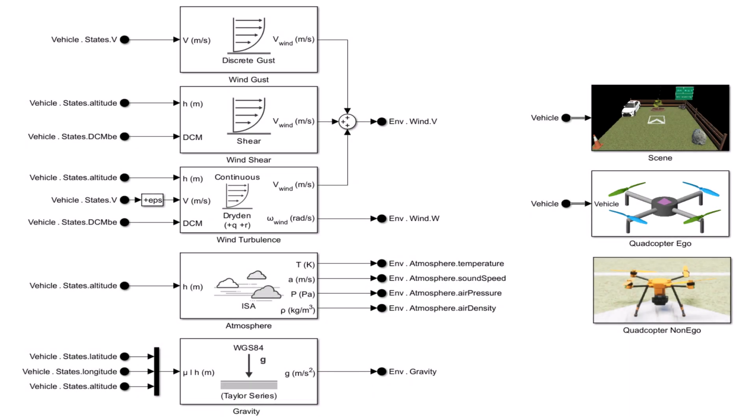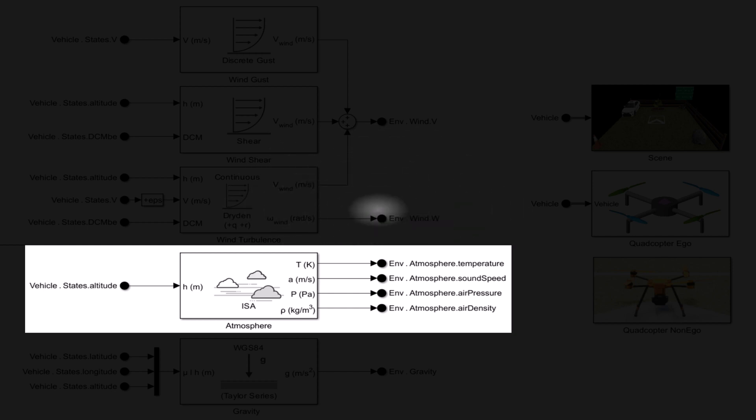Next, let's move on to modeling the atmosphere. This involves simulating key atmospheric properties such as air temperature, sound speed, pressure, and density. These parameters are essential for capturing the environmental conditions that affect aerodynamic forces and vehicle performance. Note that for low-speed and low-altitude drone applications, these properties can often be simplified by using constant values.